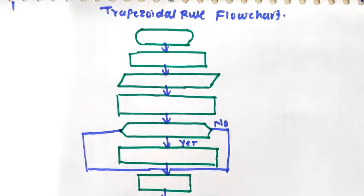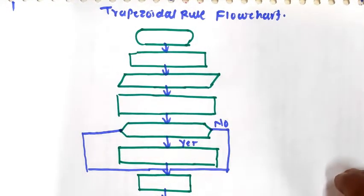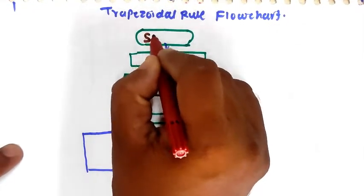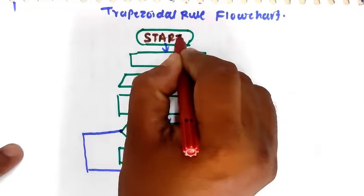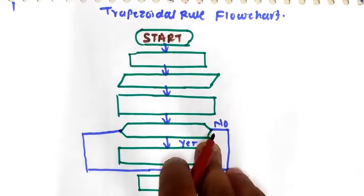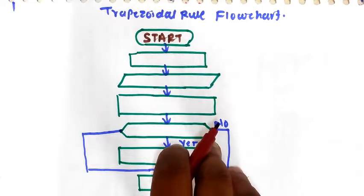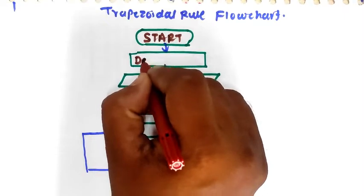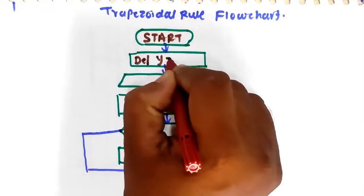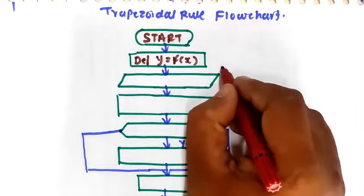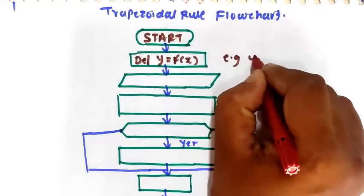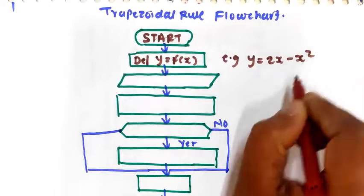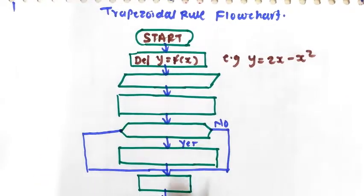Hello everyone. In this video, we are going to see the flowchart procedure for the trapezoidal rule. So we are starting a flowchart. The next step is to define the given function as y equal to f of x. The function may be, for example, y equal to 2x minus x square. So you have to define the function first.